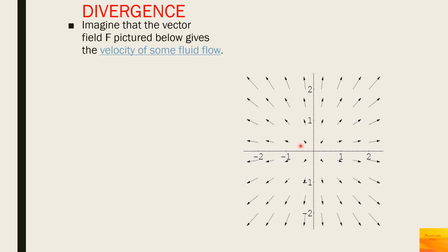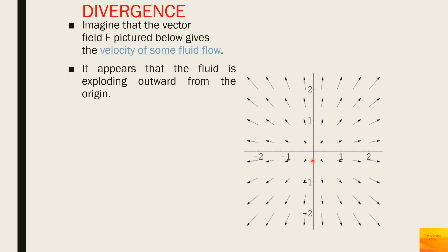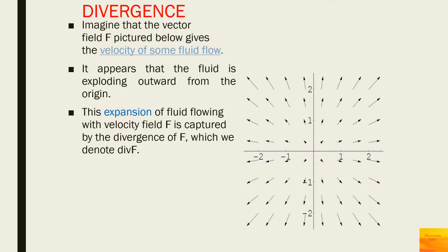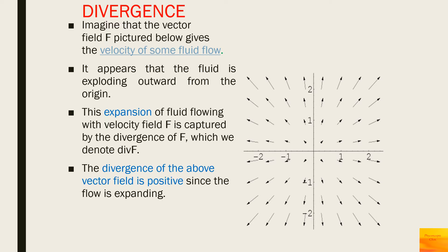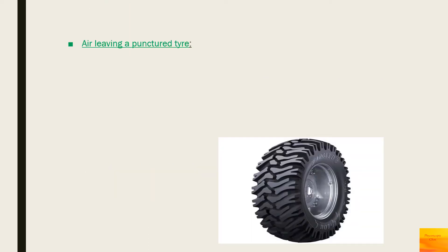Imagine a vector field F̄ that gives the velocity of some fluid flow. It appears that the fluid is exploding outwards from the origin. This expansion of fluid flowing with velocity field F is captured by the divergence of F̄. The divergence for this vector field is positive since the flow is expanding — another example of positive divergence is air leaving a punctured tire.